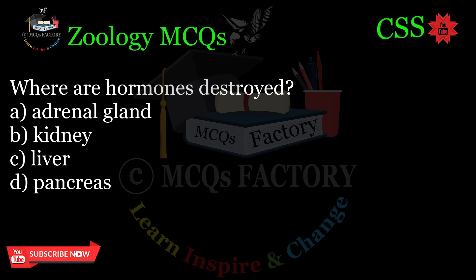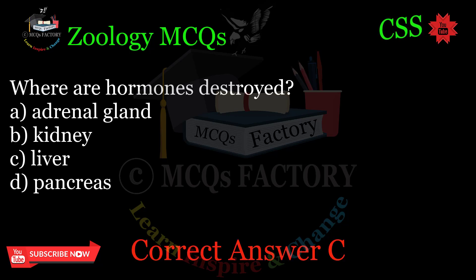Where are hormones destroyed? A. Adrenal gland. B. Kidney. C. Liver. D. Pancreas. Correct answer: C.